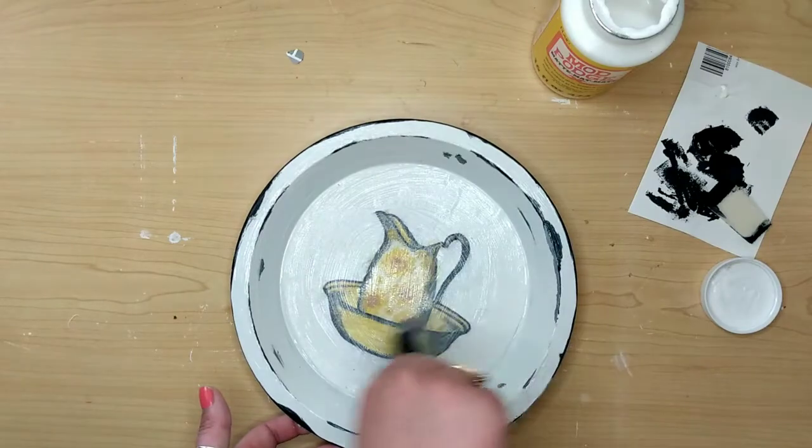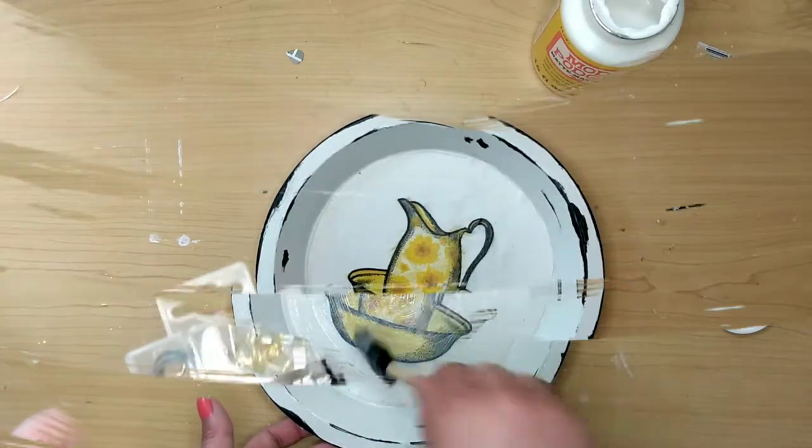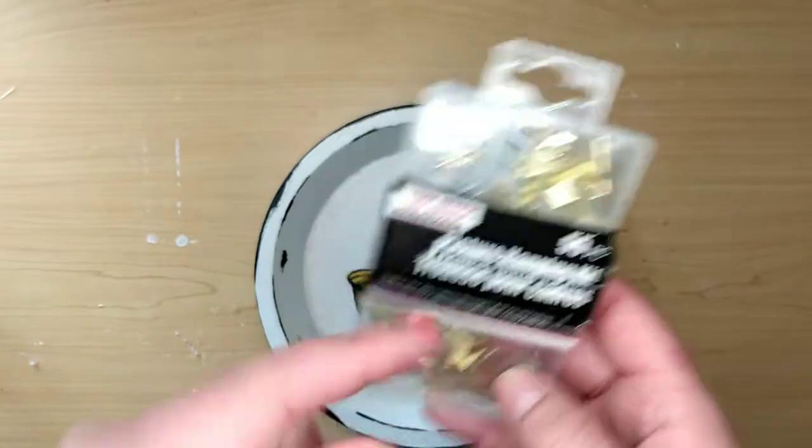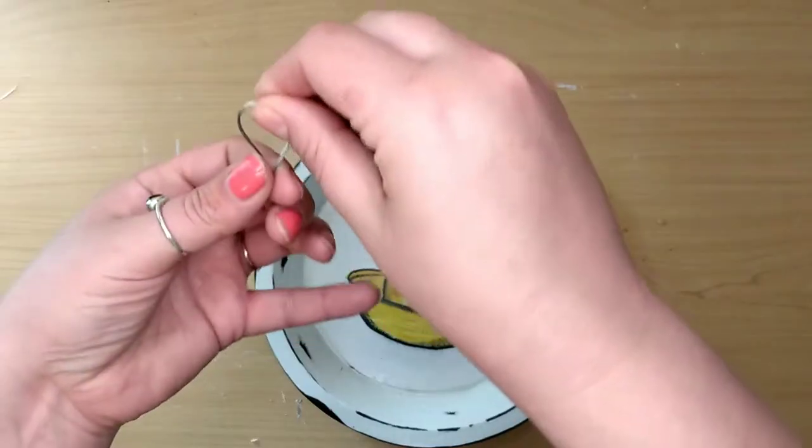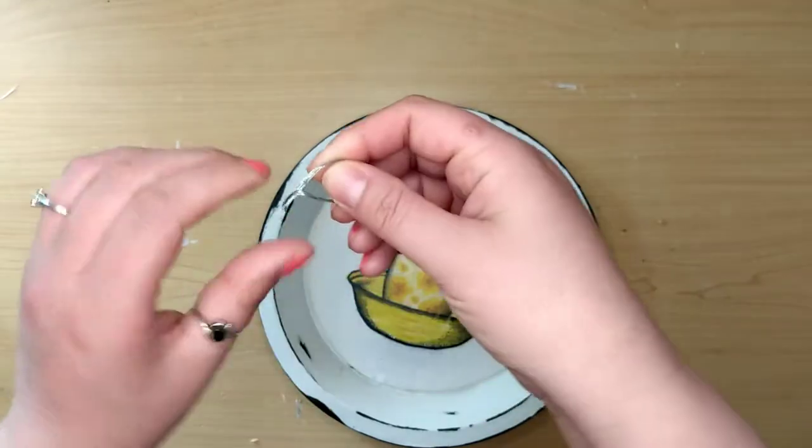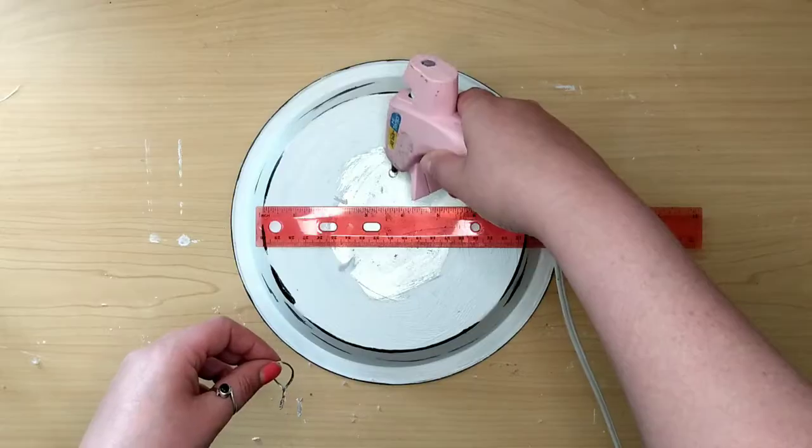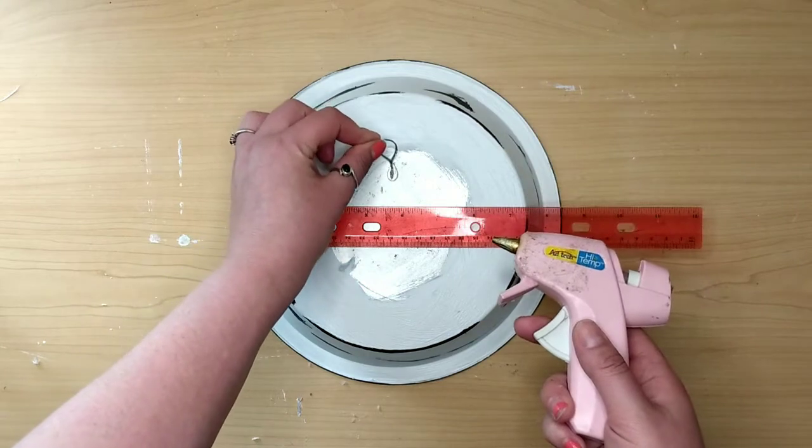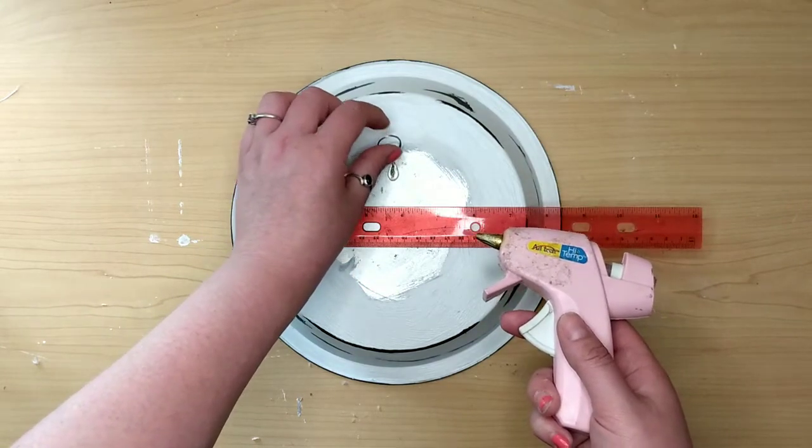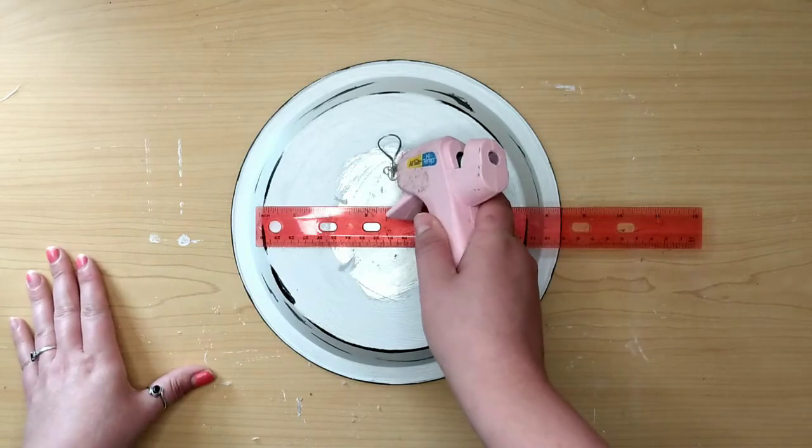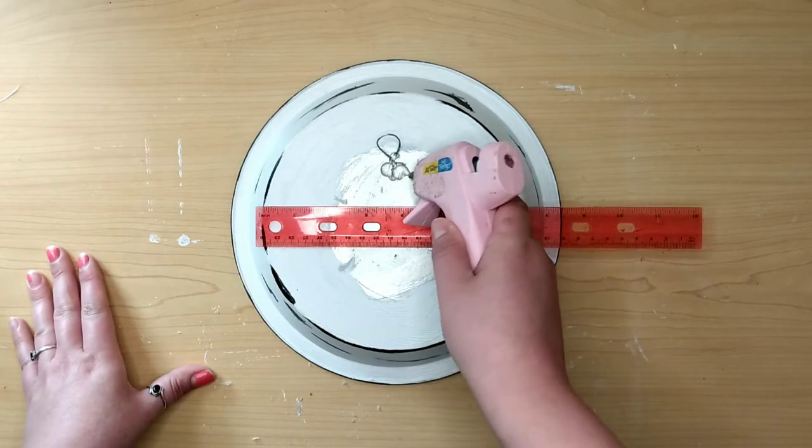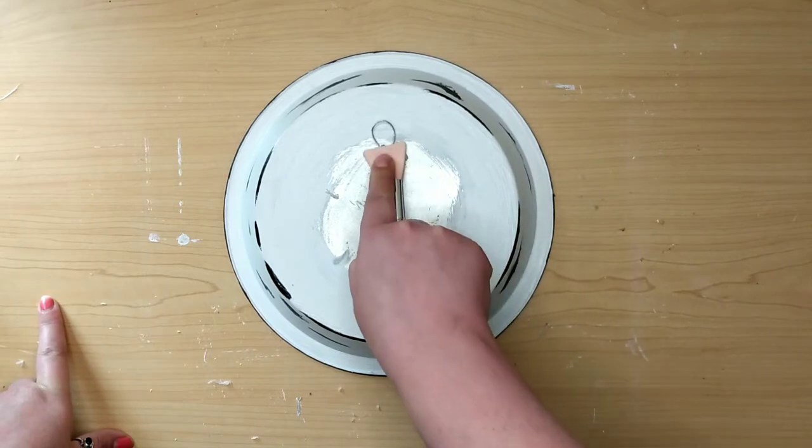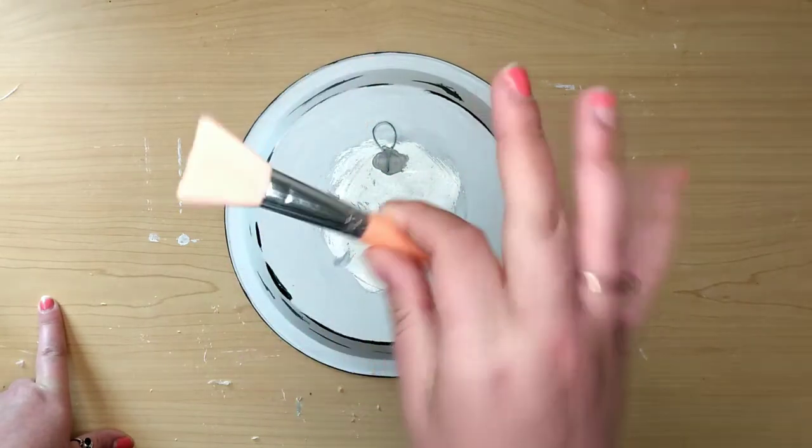And I did Mod Podge the rest of the pan as well, the back and everything. Once that was all dry and it took forever, I used this wire from the picture hanging kit from the Dollar Tree, just like two inches of the wire, twisted the ends together, and just glued that on the back. Make sure that's centered and flooded with plenty of hot glue. And yes, I was lucky enough to finally find one of those silicone makeup applicators.